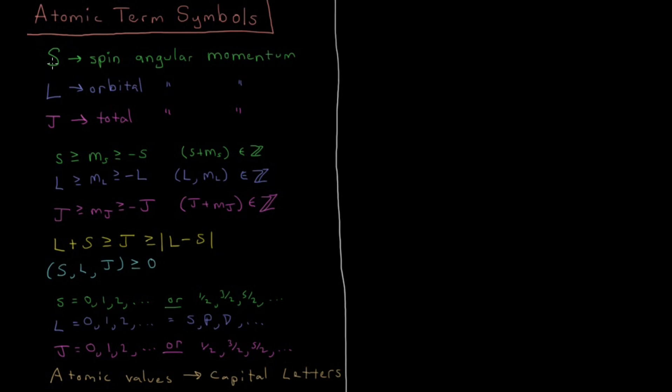We've got our capital S, which is going to be our total spin angular momentum for our entire atom. All these are going to be capital letters because they're going to represent the value for the entire atom and the aggregate of all of its electrons. So S being the spin angular momentum, the spin of the electrons, the total sum of all the spins.